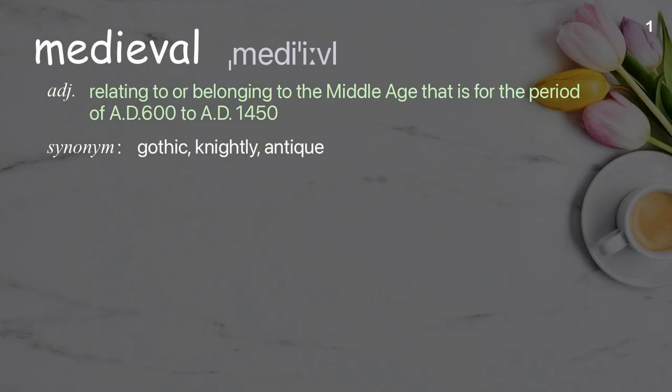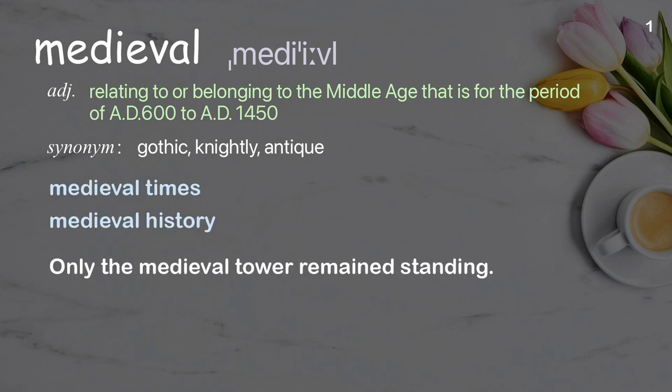Medieval: Relating to or belonging to the Middle Ages, i.e., the period of A.D. 600 to A.D. 1450. Examples: Medieval Times, Medieval History. Only the Medieval Tower remained standing.